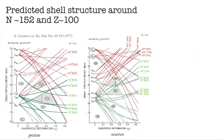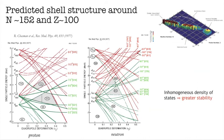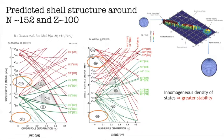What sort of structure do we expect in this region? Here is the predicted shell structure showing the single particle energies as a function of quadrupole deformation for both protons and neutrons. The large gaps for doubly-magic lead-208 and the next spherical gap open at around Z=114 and N=184. There is also deformed enhanced stability at Z=108 and N=162, and in our region of interest at Z=108-110 and N=152.